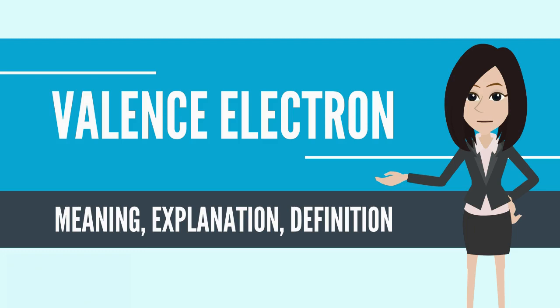For a main group element, a valence electron can exist only in the outermost electron shell. In a transition metal, a valence electron can also be in an inner shell.